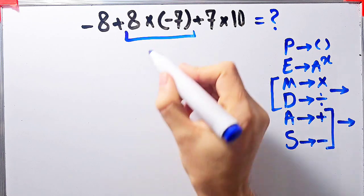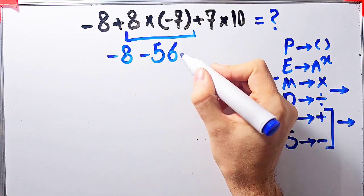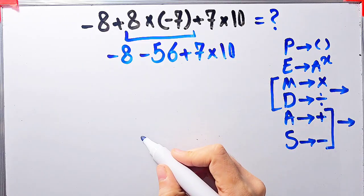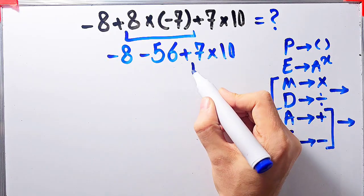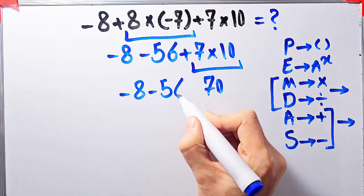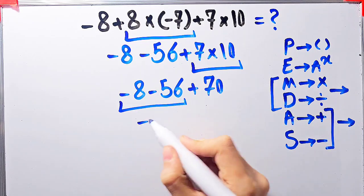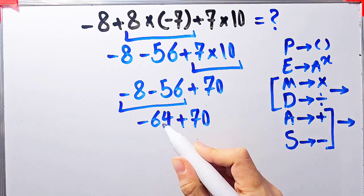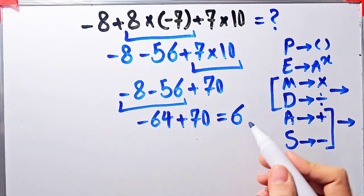Now we have negative 8 minus 56 plus 7, then times 10. We have subtraction, addition, and multiplication. First we do the multiplication: 7 times 10 equals 70. Now we have negative 8 minus 56 plus 70. Negative 8 minus 56 equals negative 64, and negative 64 plus 70 equals 6. The final answer of this question equals 6.